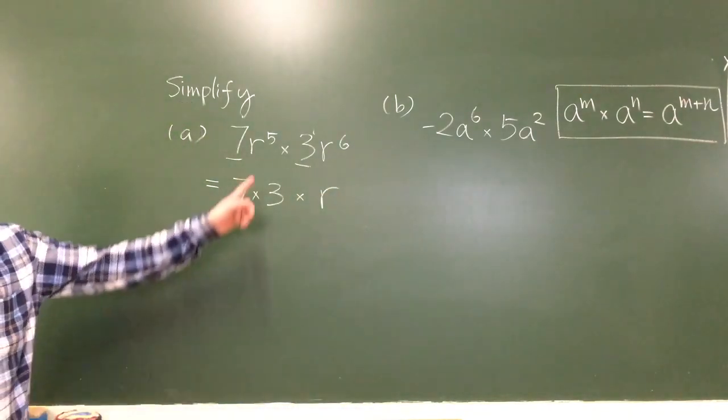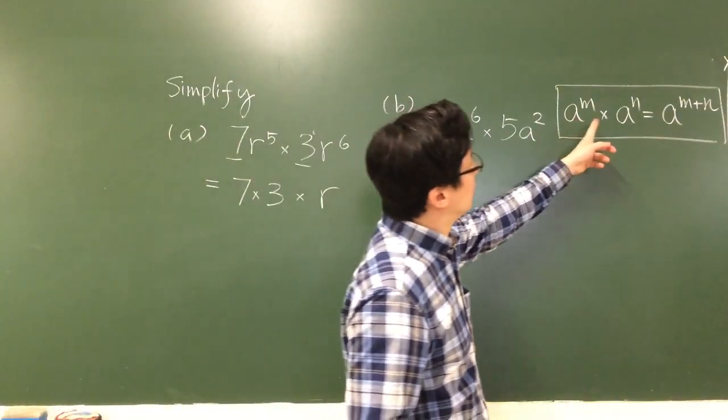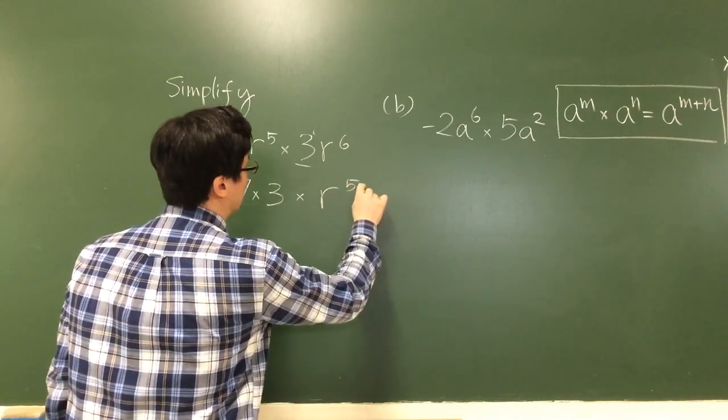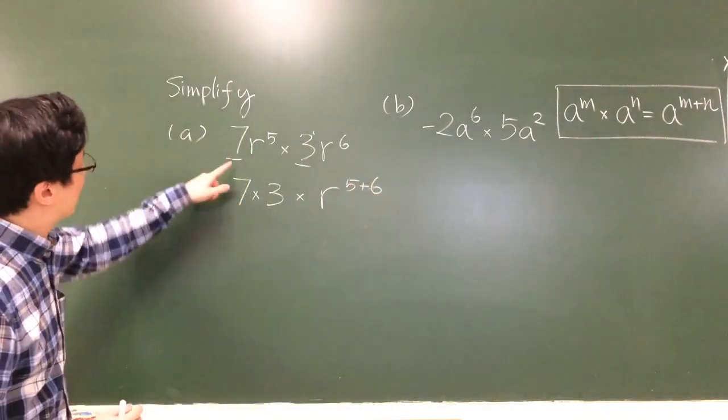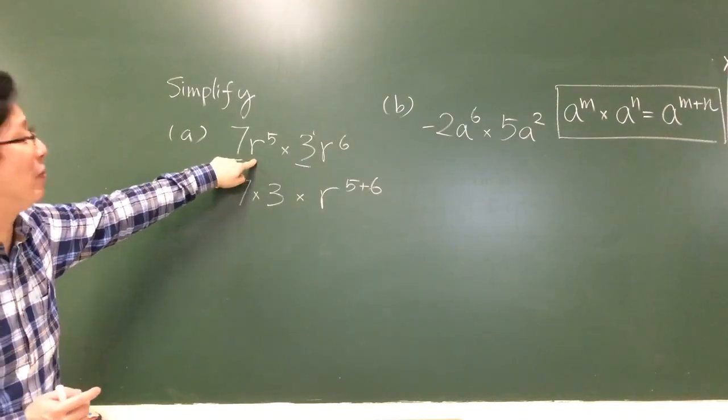And now we have r to the 5 times r to the 6. You can apply the index law. We just add up the indices. They have the same base r, so we have to keep in mind that the coefficients are different from the base, the variable.